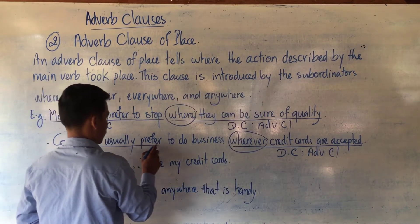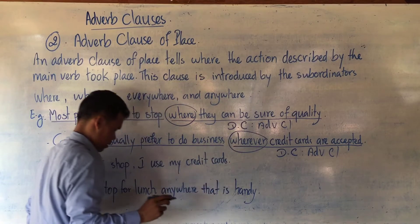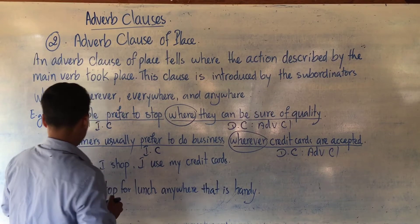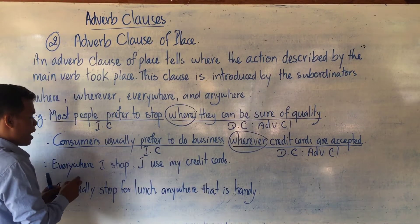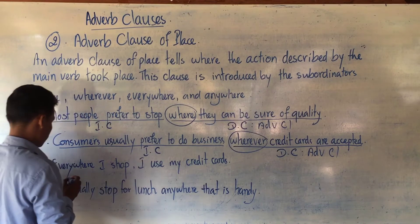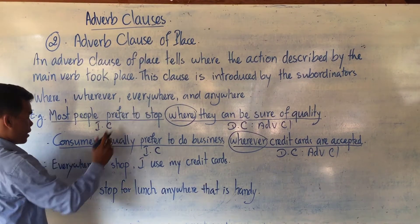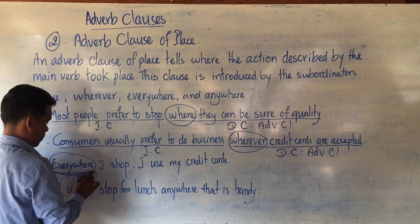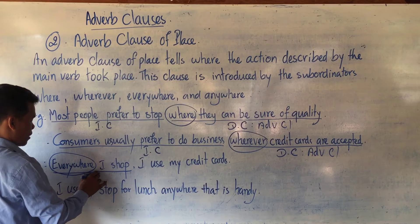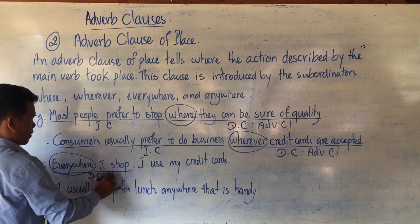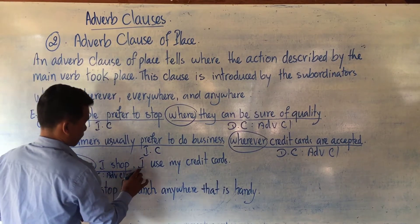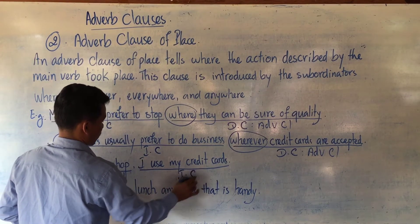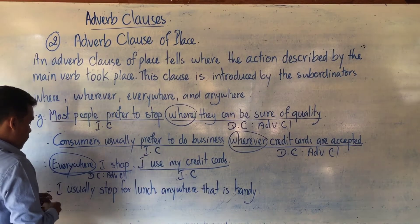And from 'consumers' to 'business' is the Independent Clause (IC). Example number three: 'Everywhere I shop, I use my credit card.' 'Everywhere' is the subordinator. From the subordinator to 'shop' is the DC — it is an Adverb Clause of Place. After the comma, 'I use my credit card' is the Independent Clause or Main Clause.